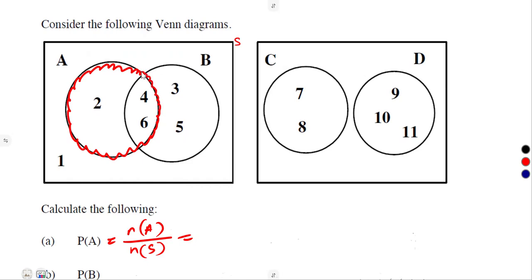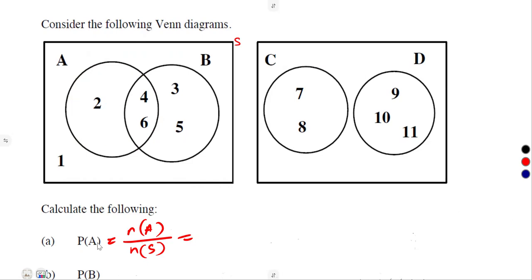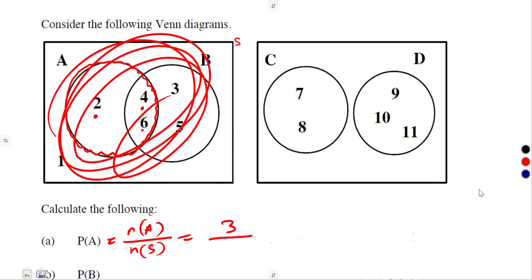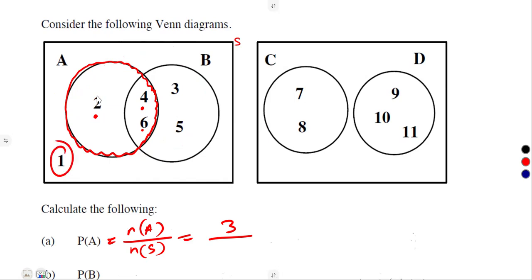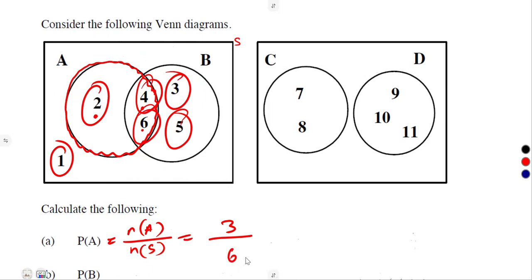They did not mention A only — this is A. You take everything. You surround this A. How many elements do you see? One, two, three — there are three elements. Out of the whole sample space, how many elements? One, two, three, four, five, six elements. So that's three out of six, which gives us one out of two.